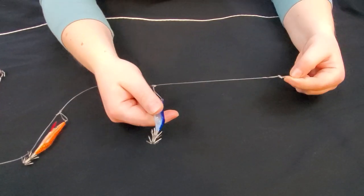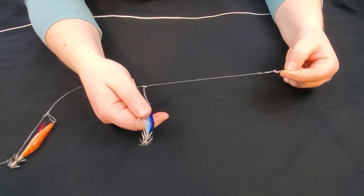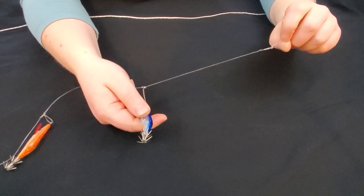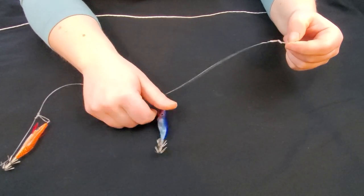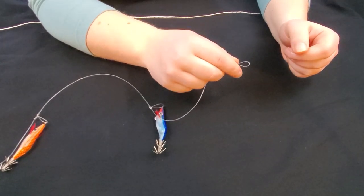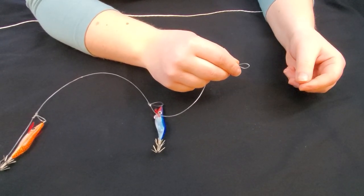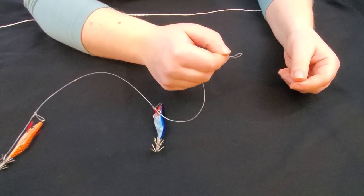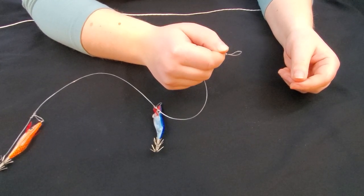At the very top of my monofilament leader, I tie a knot to attach it to another snap that's going to be attached to your main line, and I use 30-pound test braided line.